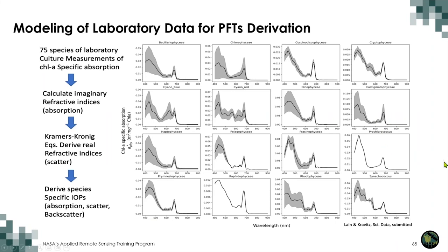Data provided by Jeremy Kravitz uses chlorophyll a-specific absorption data from 75 different species collected in labs around the world. Absorption curves normalized by biomass are used to calculate imaginary refractive indices, from which real refractive indices are derived to ultimately produce species-specific inherent optical properties. Species represented include green and red algae and various types of cyanobacteria.